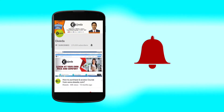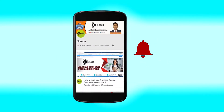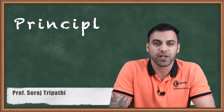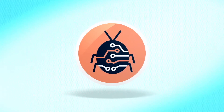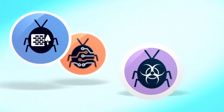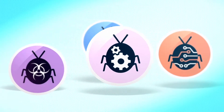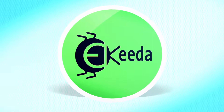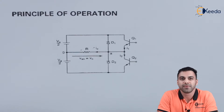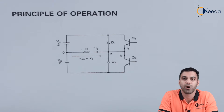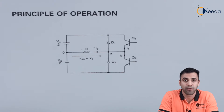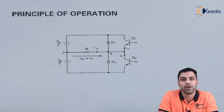Hello friends, today we are going to discuss about the principle of operation of an inverter. As we have read about semiconductor devices, how they operate, and what kind of output voltages and output currents we get — we learned about the rectifier. A rectifier converts an AC voltage to a DC voltage.